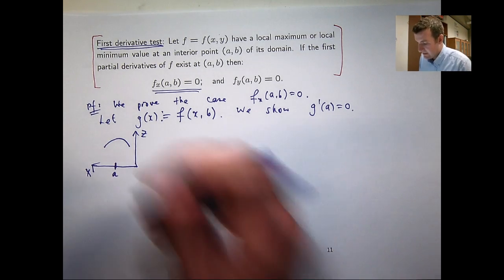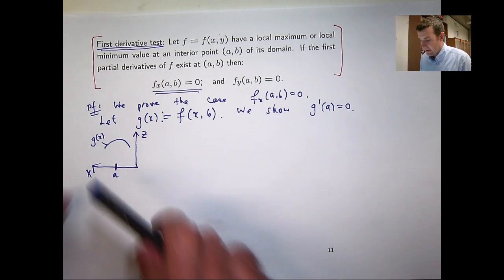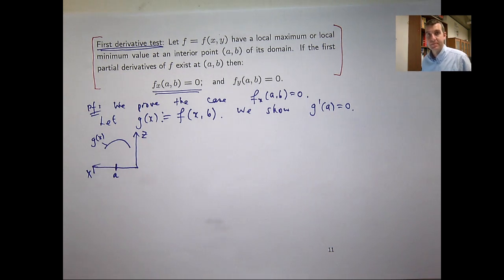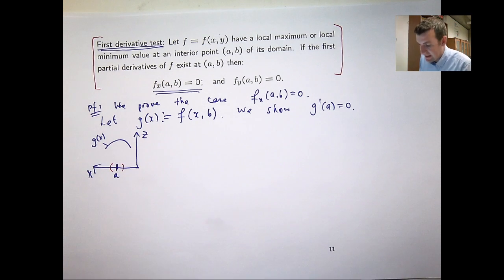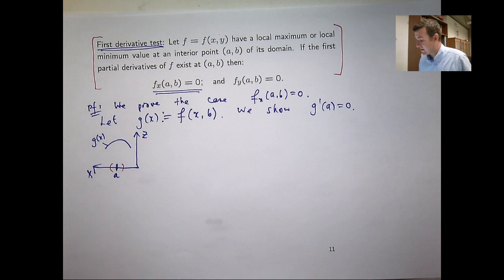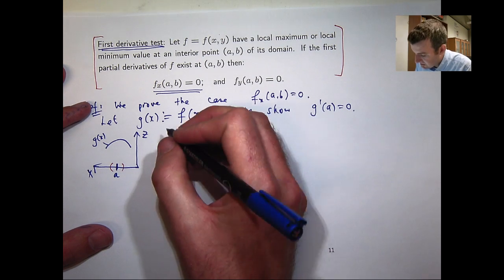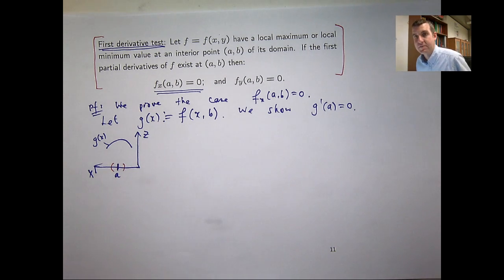Alright well you can see here that our function g has a local maximum at that point. So you can see for all other points close to a, g(a) is greater than or equal to g(x). For all x points close to a. So this is basically, this picture is set in the plane y equals b. It's like a slice involving the plane y equals b.